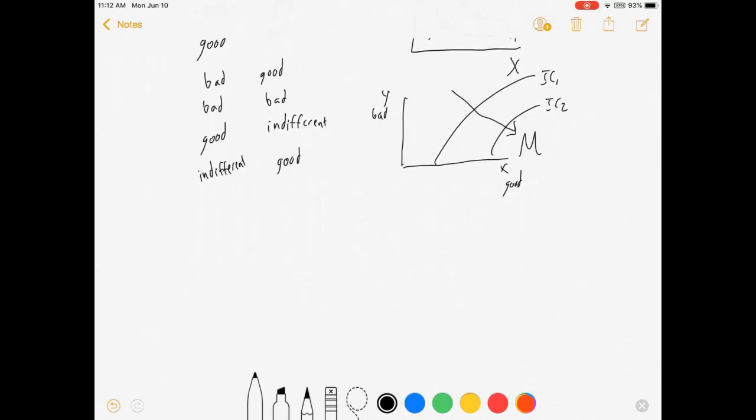Let's draw the next situation where X is bad and Y is good. We want lots of Y and we don't want X. Our mountain is over here. Same idea, we'll trace some indifference curves around the mountain. Utility is increasing as we move that way.